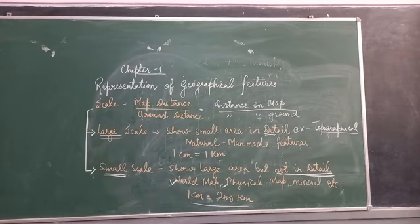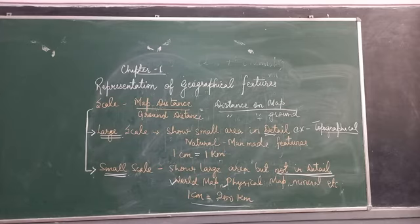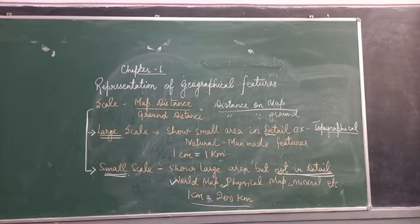In the large scale map, various colors are used to describe natural and man-made features. In the large scale map, 1 cm is equal to 1 km. So the distance of 1 cm between any two places on the map is equivalent to a distance of 1 km on the ground. This means very minute detail of things is given in the large scale map.